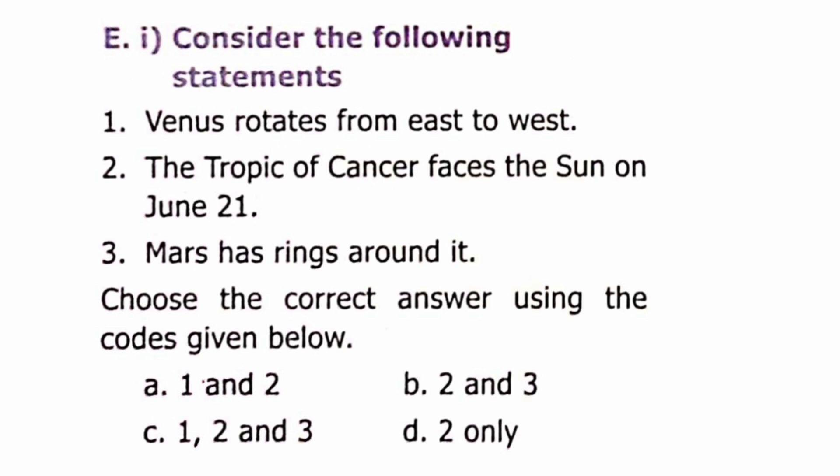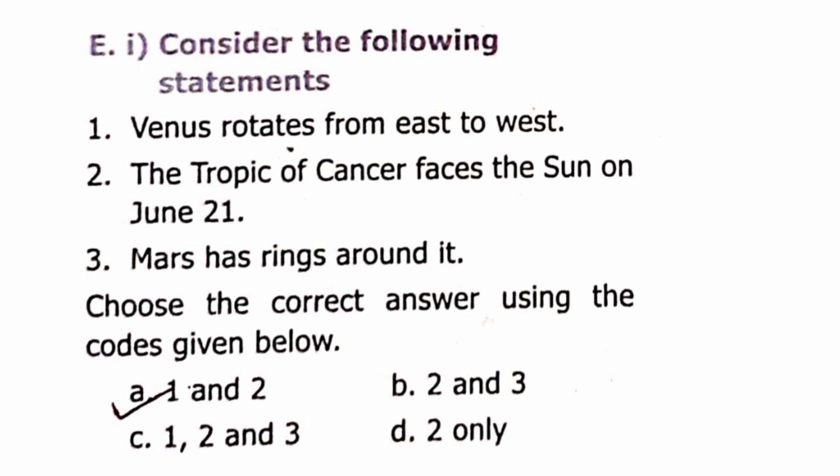Section E: Consider the Statements. Statement 1: Venus rotates from east to west. Statement 2: The Tropic of Cancer faces the Sun on June 21st. Statement 3: Mars has rings around it. Statements 1 and 2 are correct; Statement 3 is false because Mars has no rings — Saturn does. The correct answer is A (1 and 2).